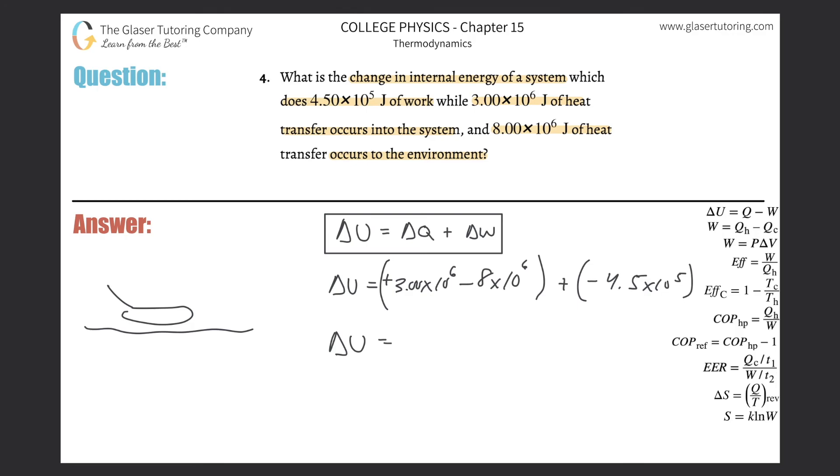And what do we get? We get negative 5.45 times 10 to the 6, and that is in terms of joules. So this tells us that the internal energy of the system is decreasing. Why? Because it's letting out more energy than it's taking in. That's it.